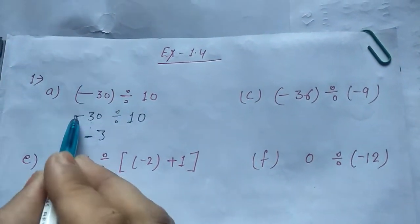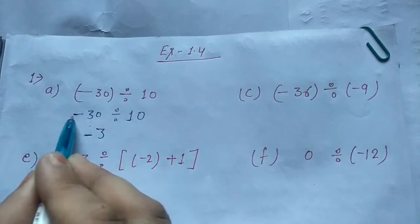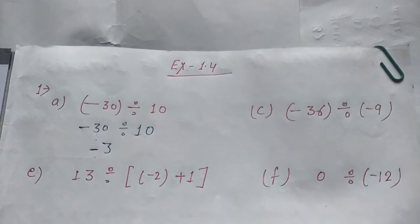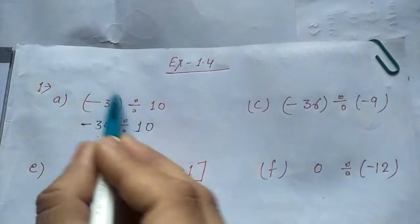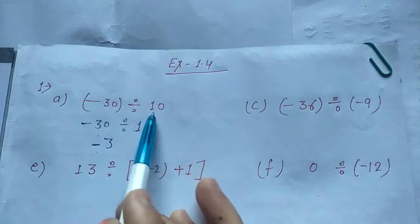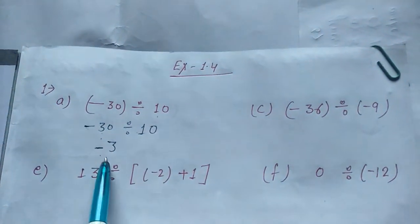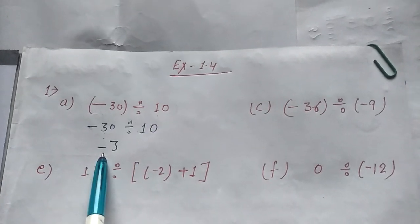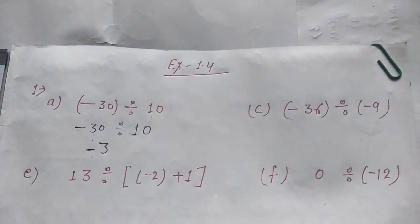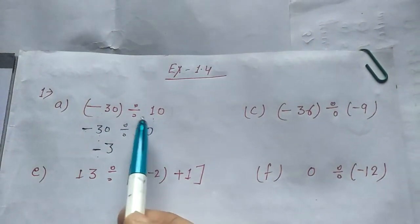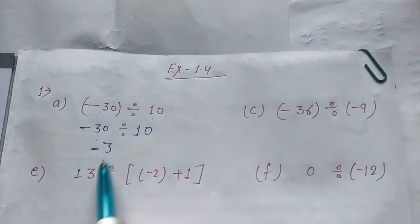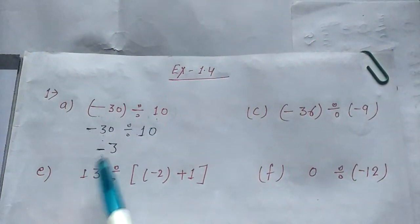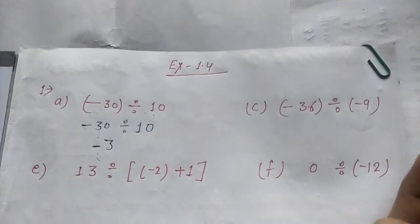And minus 30, so the answer is minus — minus and this number is plus, so minus. Agar jab aap divide karte hain numerator aur denominator, toh inme se agar koi bhi ek negative hota hai, toh hamaara answer negative aata hai. Agar dono negative honge, toh hamaara answer positive hoga. Bas do hi rules hain is mein.